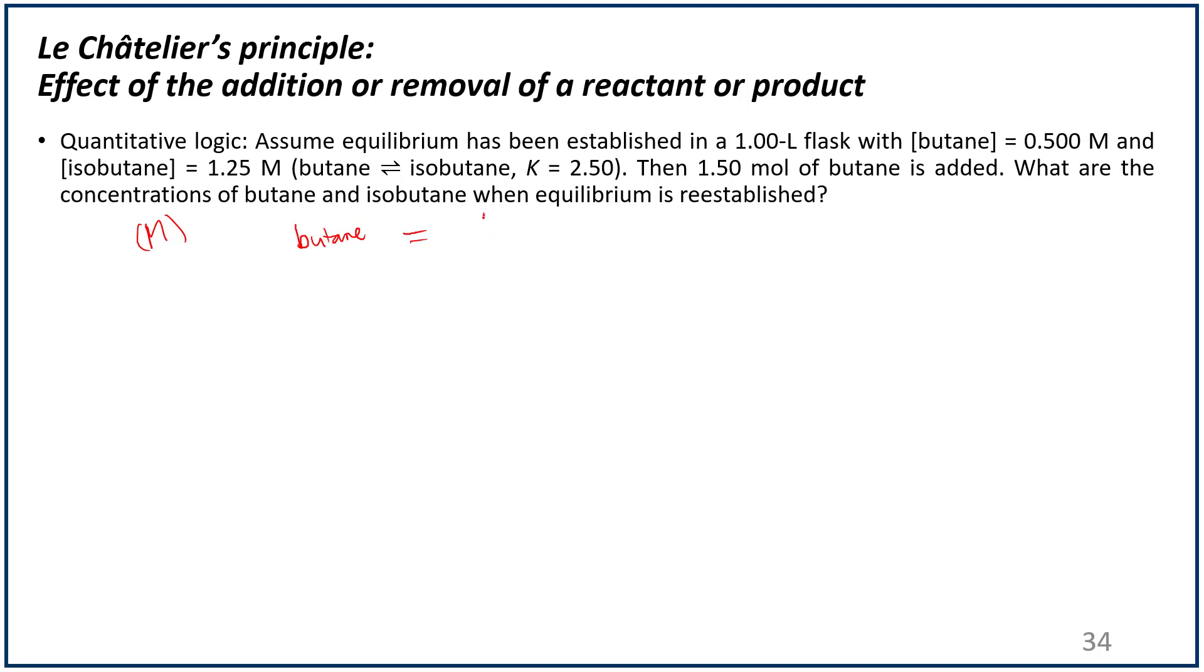That is butane going to isobutane. We should write the value for K. So K is just the concentration of isobutane divided by the concentration of butane. And then we're going to write the initial concentration here. Now, instead of writing change, let's write here something first, like concentration after adding butane. That's what we added. And then change, and then finally equilibrium.